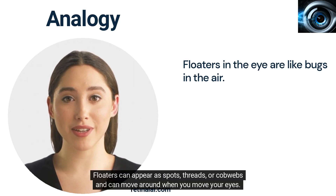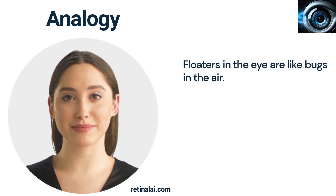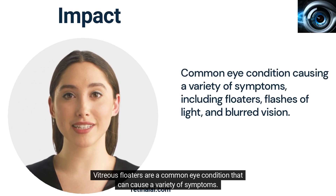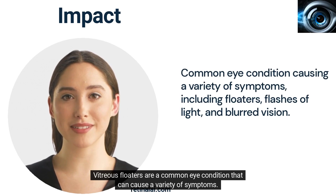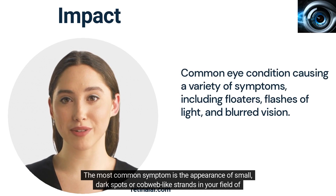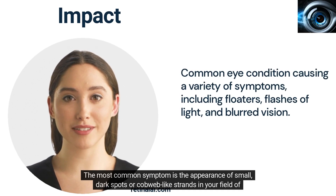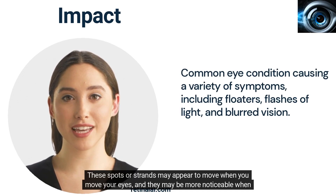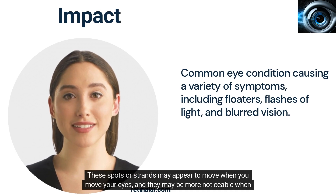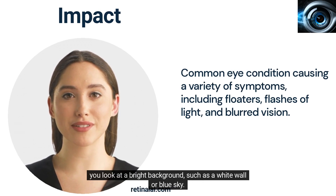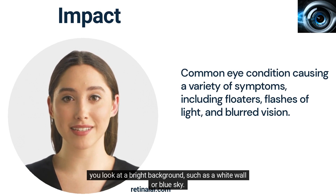Floaters can appear as spots, threads, or cobwebs and can move around when you move your eyes. Vitreous floaters are a common eye condition that can cause a variety of symptoms. The most common symptom is the appearance of small dark spots or cobweb-like strands in your field of vision. These spots or strands may appear to move when you move your eyes, and they may be more noticeable when you look at a bright background, such as a white wall or blue sky.